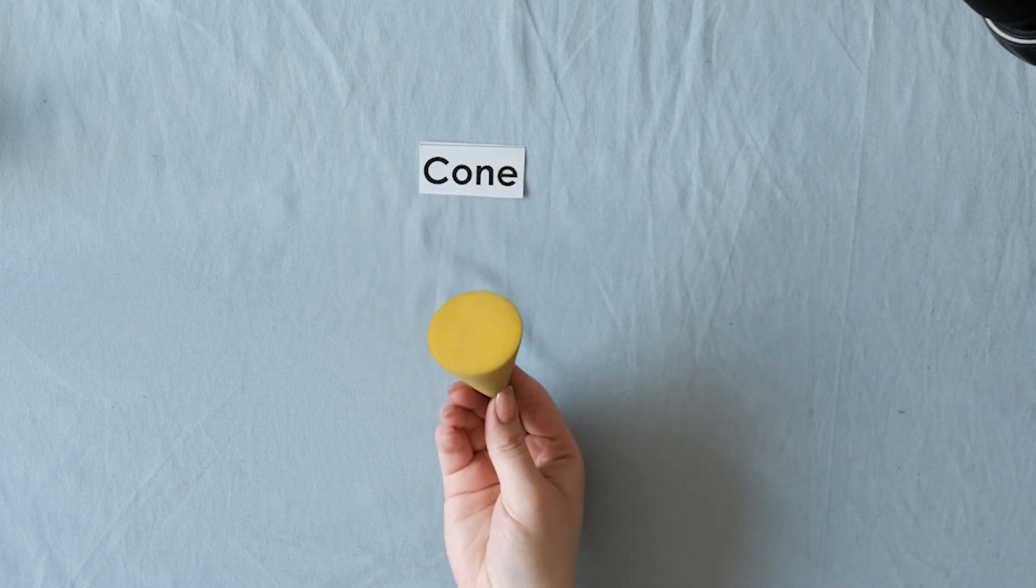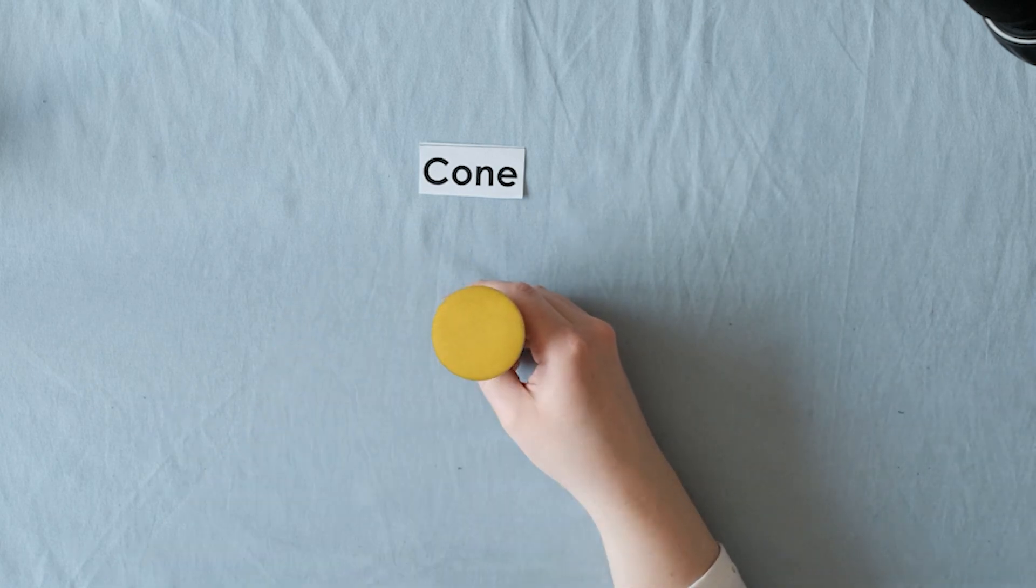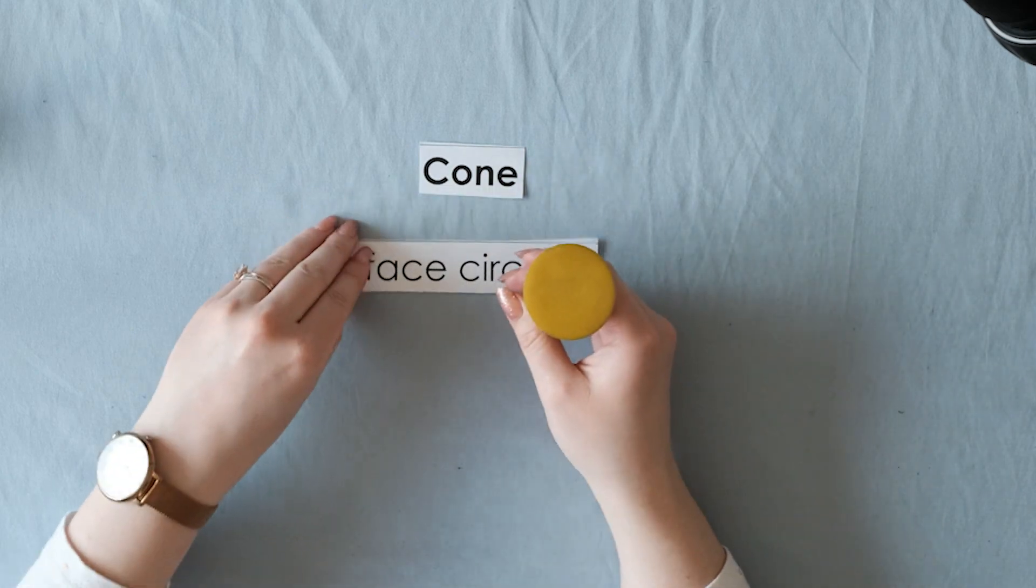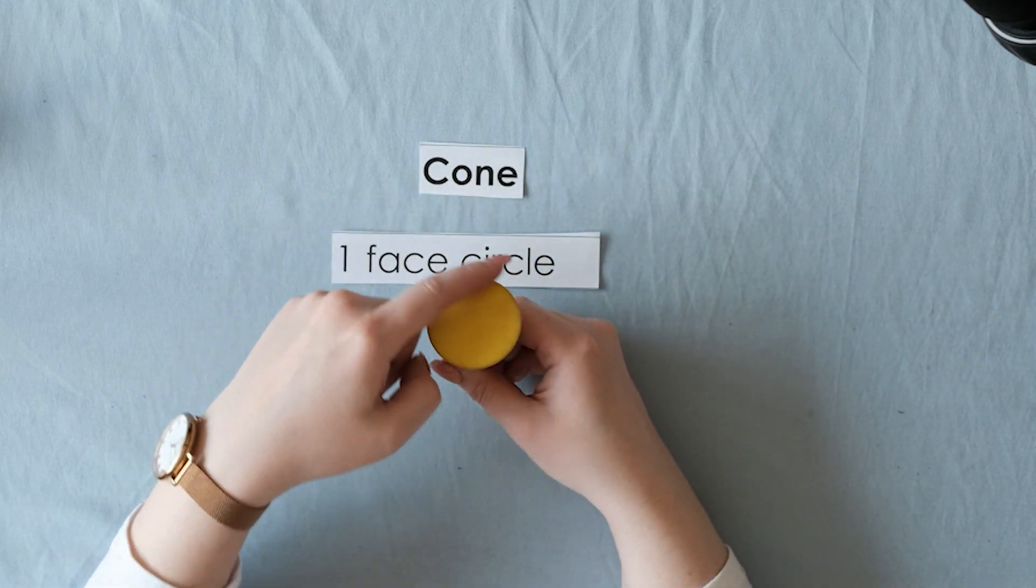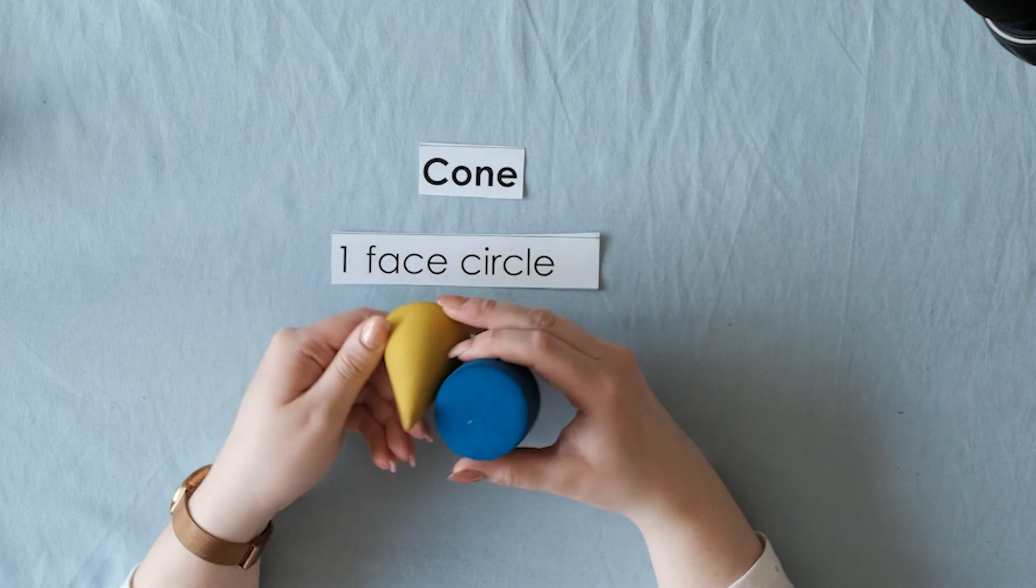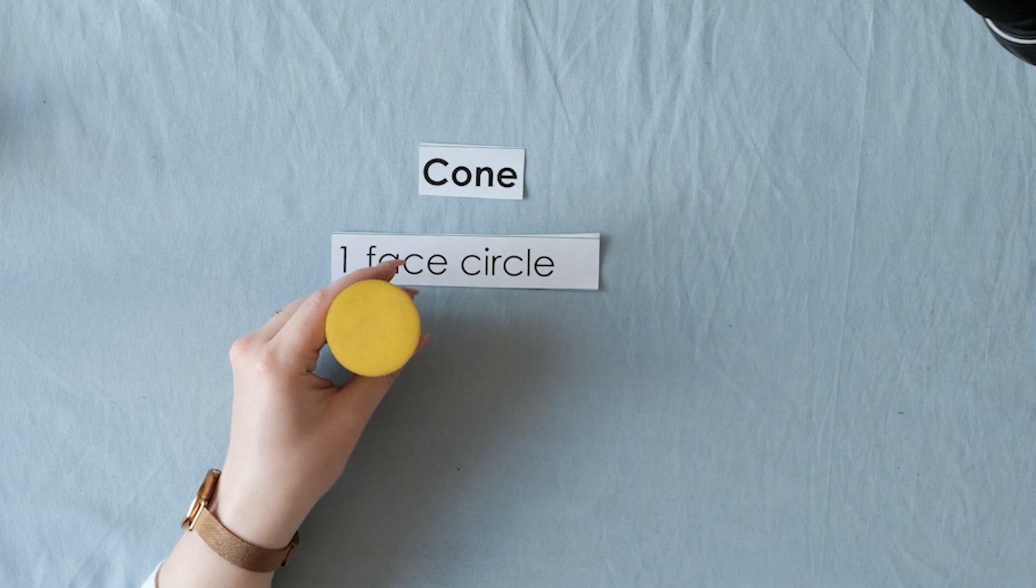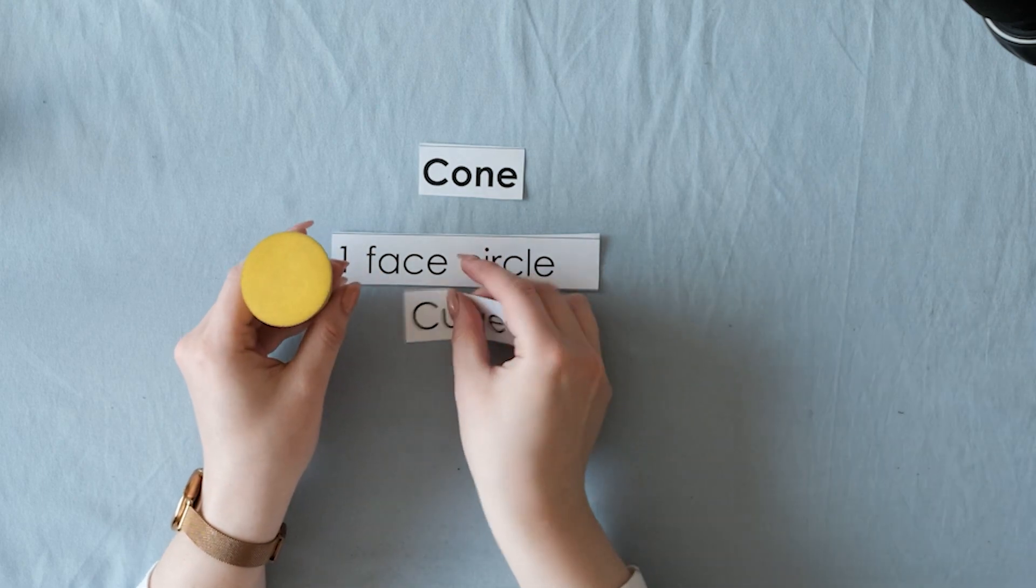Let's look at what makes it special. The first thing is that it has one flat surface, so it has one face. What shape is that? It's a circle, kind of like a cylinder, but it only has one circle, not two. It's also curved, just like a cylinder.